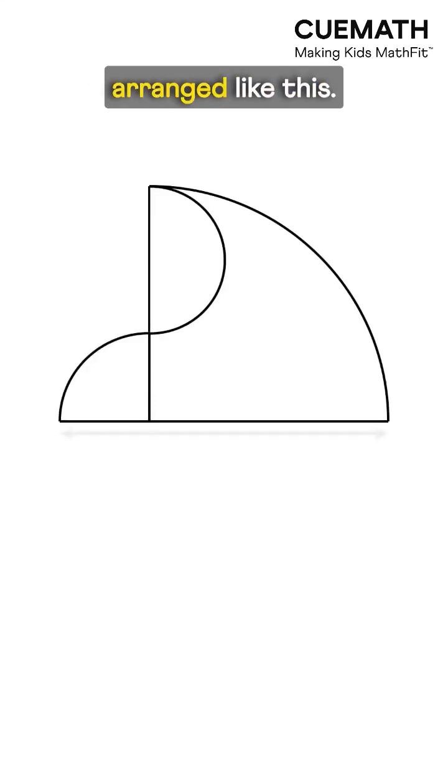Two quarter circles and a semicircle are arranged like this. If this length is 12, what's the shaded area?